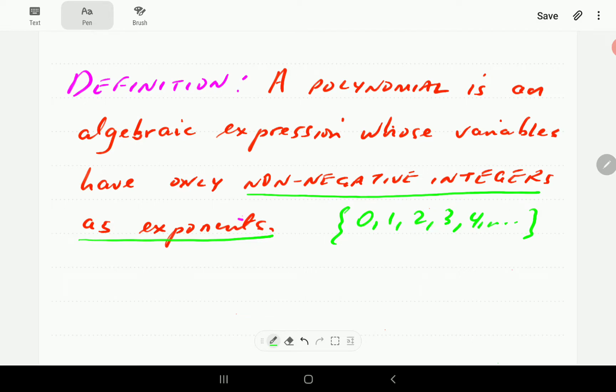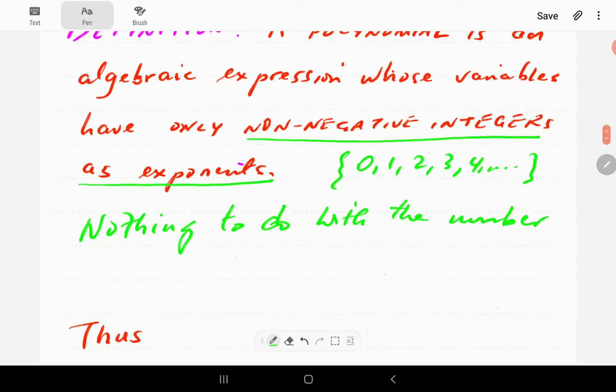Then that expression is called a polynomial. Notice that from this, it's got nothing to do with the number of terms. So this definition has nothing to do with the number of terms, as you might have expected from the prefix poly.